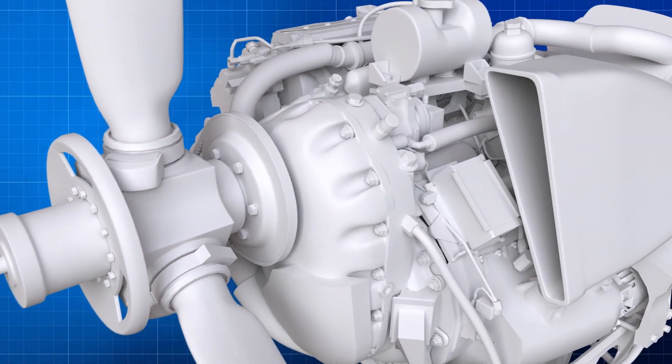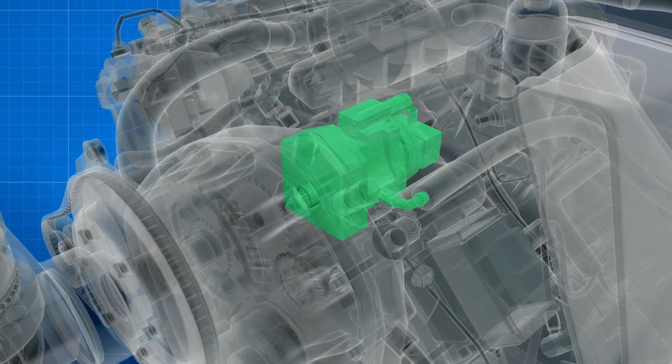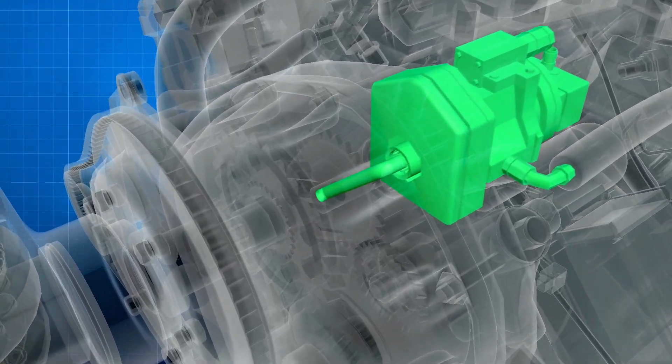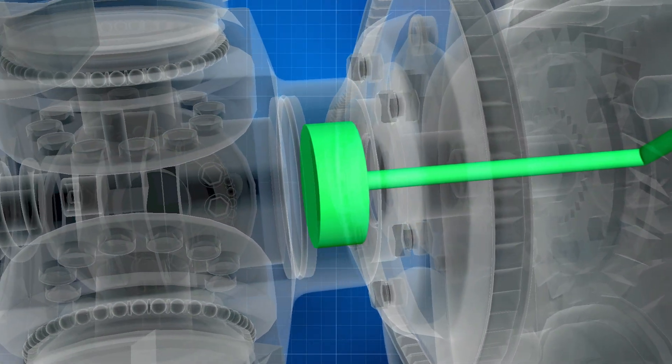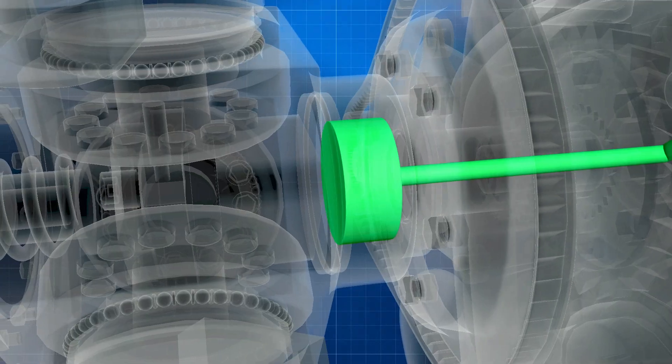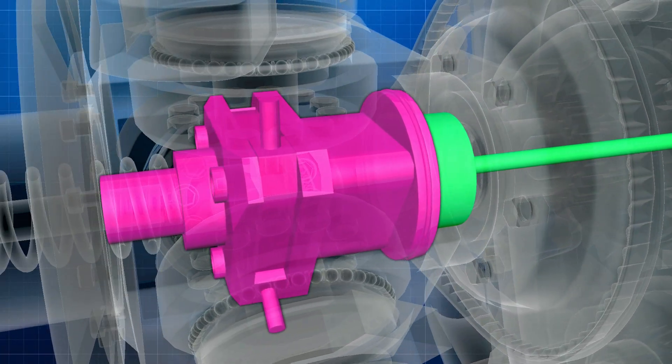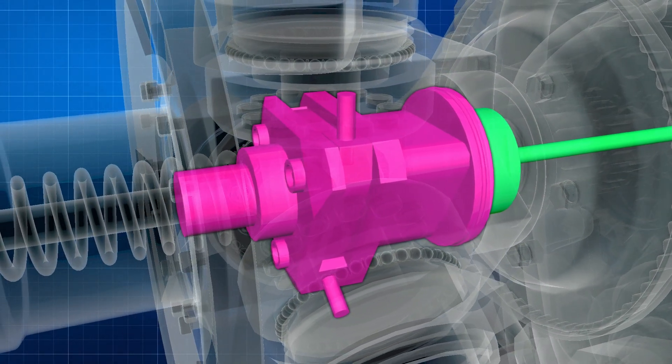When turning the blades toward fine pitch, oil from the engine gearbox is pumped to the governor and directed to the propeller hub. Each blade is connected to a piston located inside of the propeller hub.